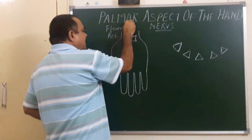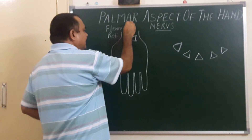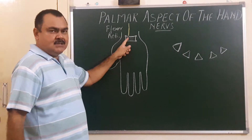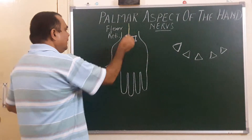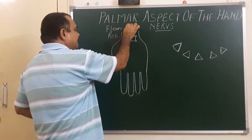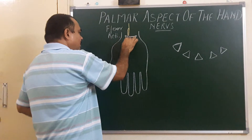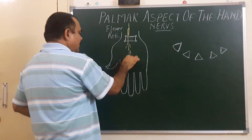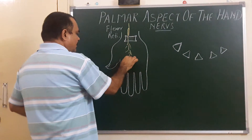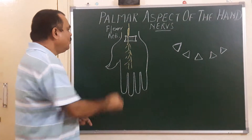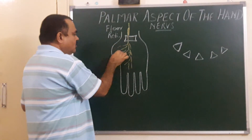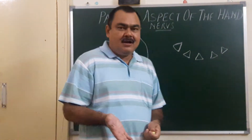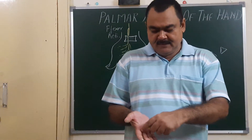Here, this is the median nerve in the forearm about 5 cm proximal to the flexor retinaculum. This median nerve gives a palmar cutaneous branch, which gives supply to the skin of the lateral two-thirds of the palm.